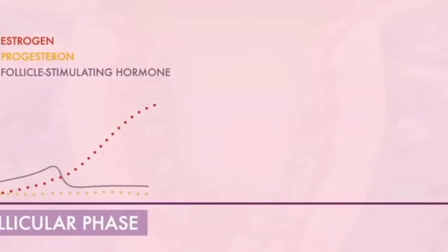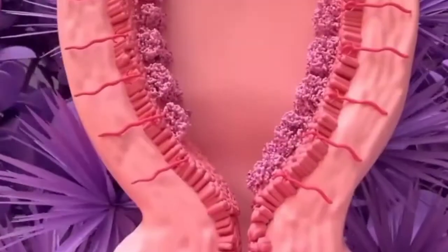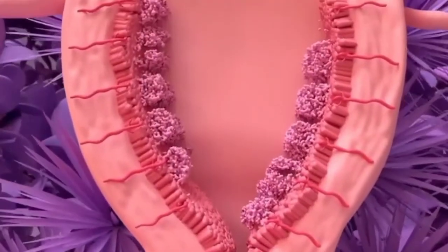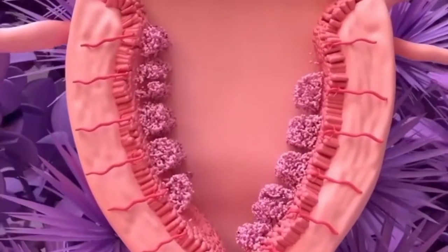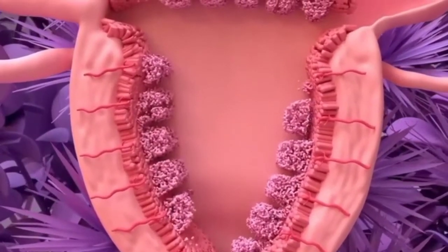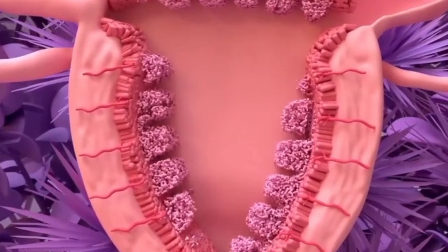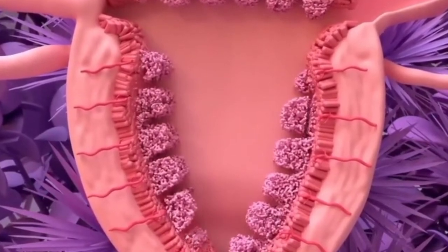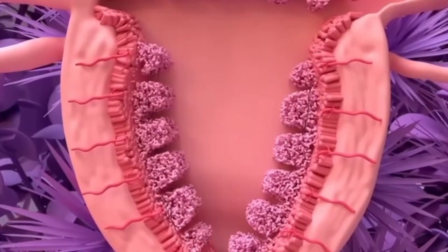The smaller follicles are effectively starved of follicle-stimulating hormone. The increase in estrogen in your body also ensures that the lining of your uterus thickens with nutrients and blood. That way, if you become pregnant, the fertilized egg will have everything it needs to grow.